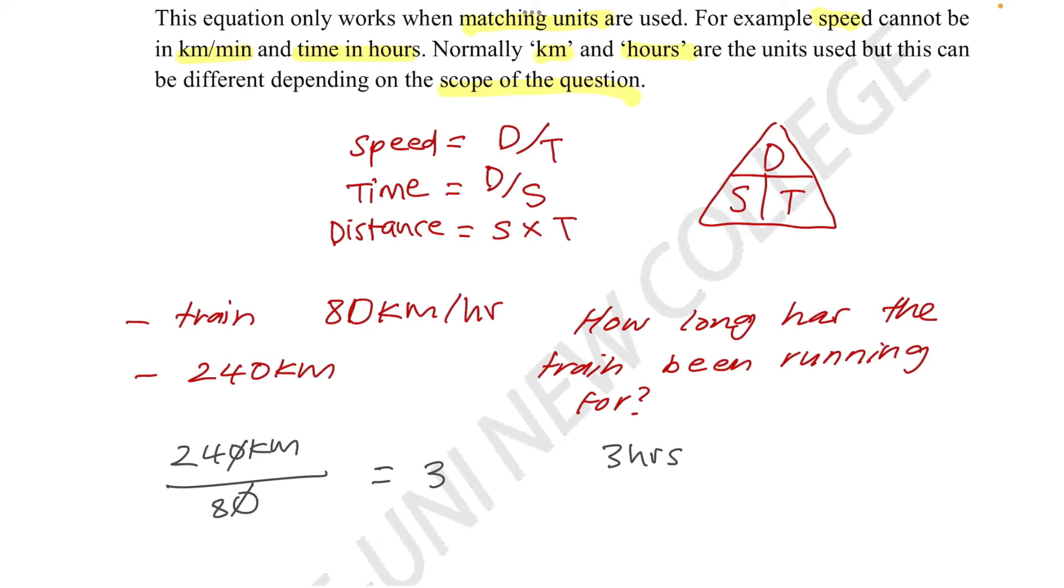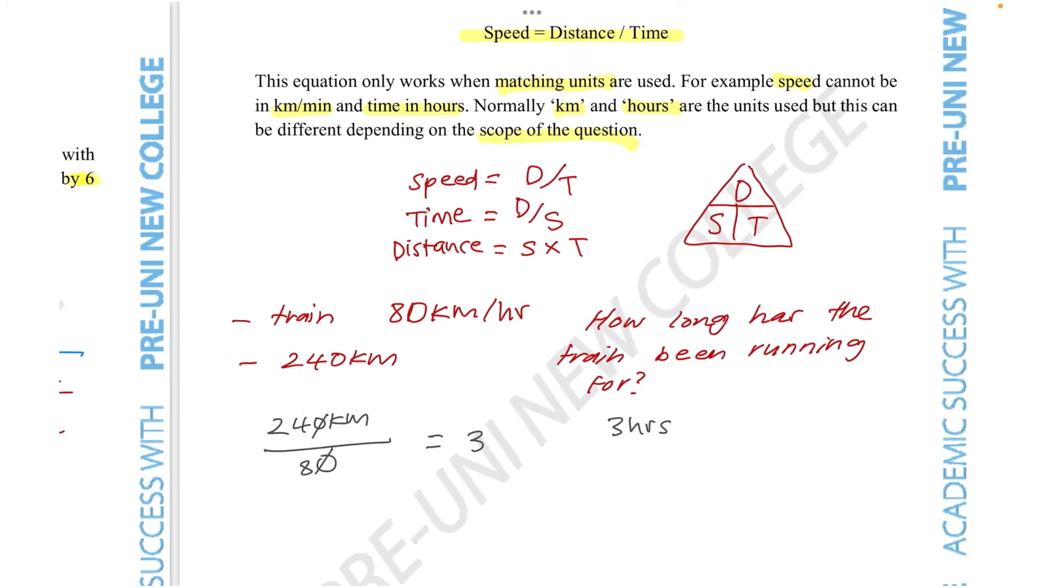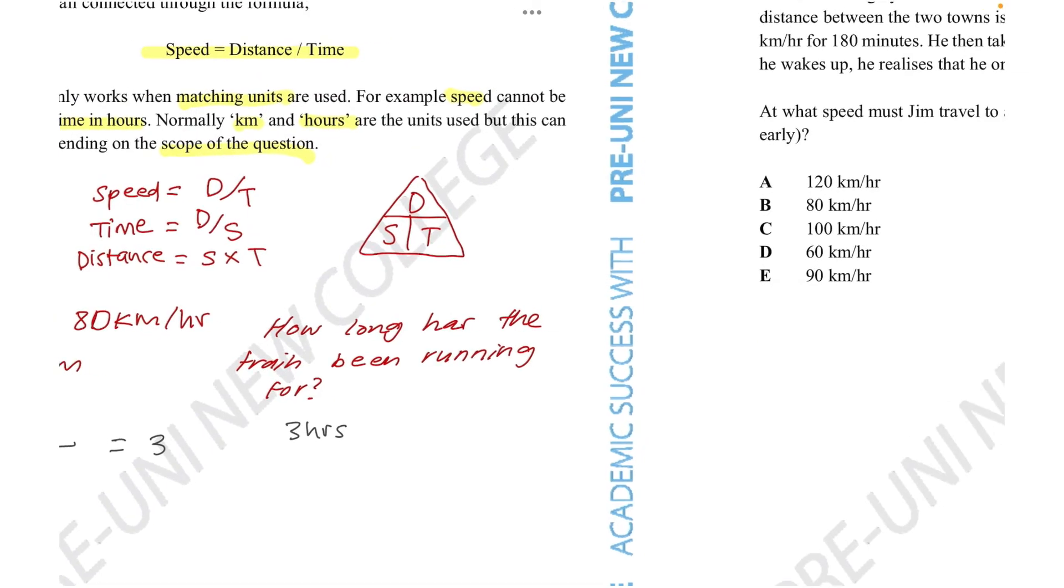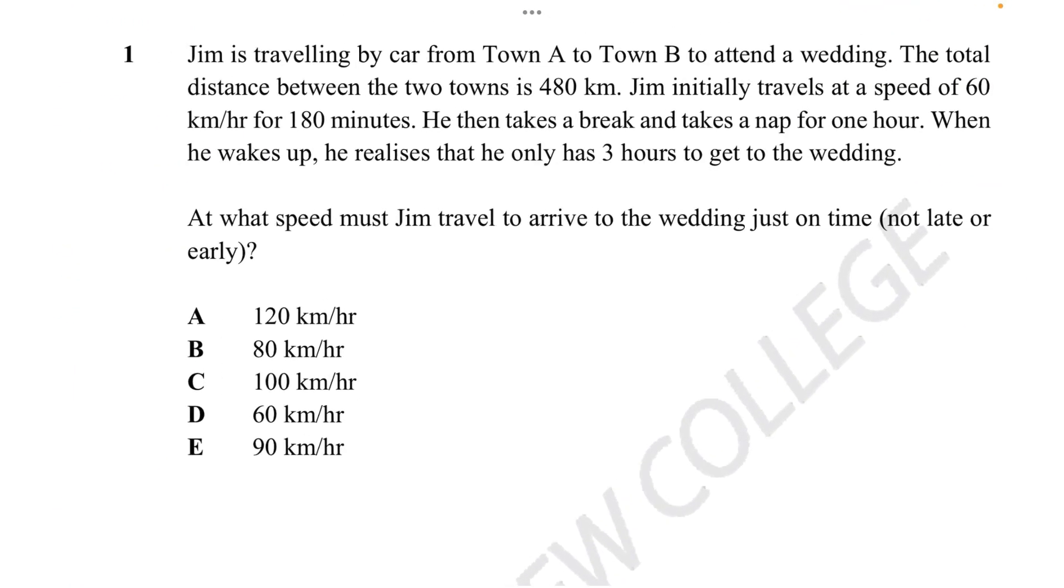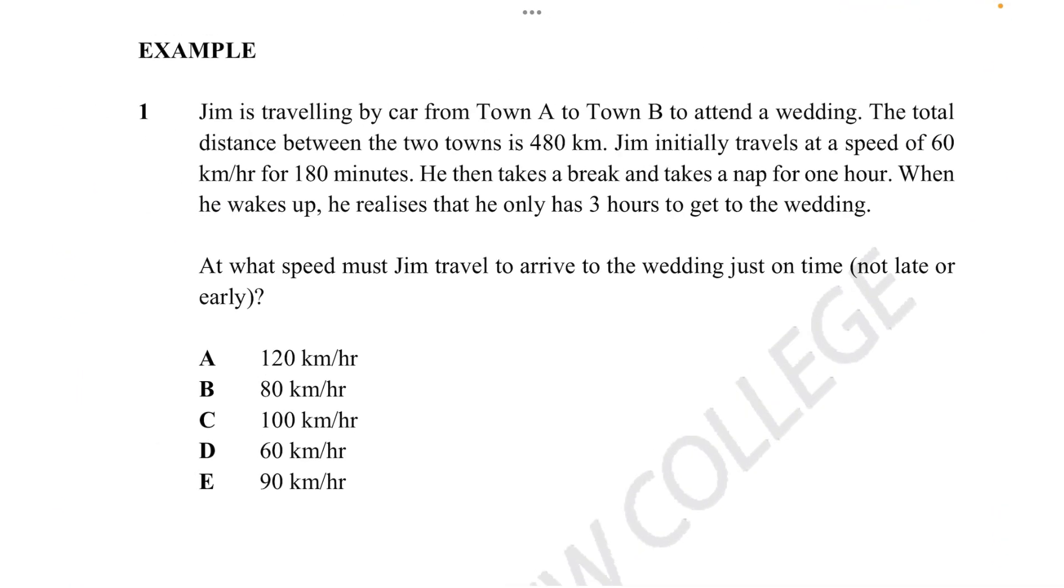Okay, let's see if we can do some examples given by the sheet. So let's try an example here. Jim is traveling by car from town A to town B to attend a wedding. The total distance between the two towns is 480 kilometers. Jim initially travels at a speed of 80 kilometers an hour for 180 minutes. Then he takes a break and takes a nap for one hour. When he wakes up, he realizes that he only has 3 hours to get to the wedding.